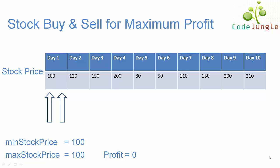Now let's look for a feasible solution. For this we are going to iterate through this array, from day 2 till the end of the array. But before that we have some prerequisites: we will consider minimum stock price and maximum stock price as the price of day 1, that is 100, and our profit has to be 0.